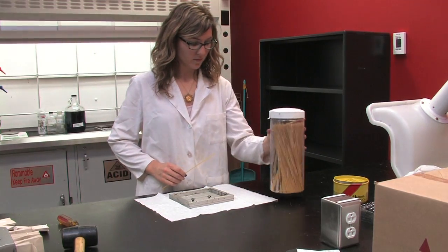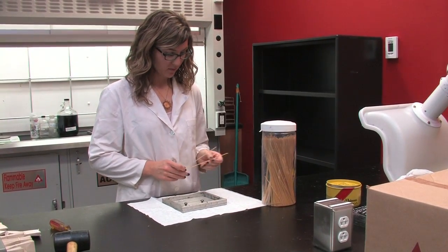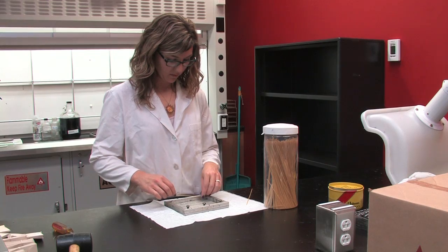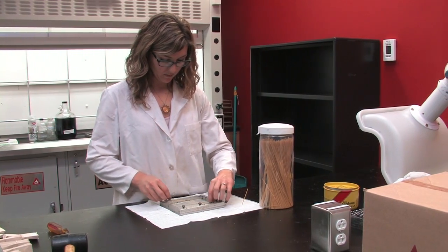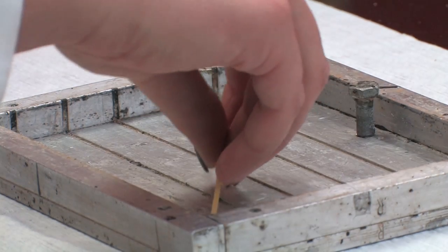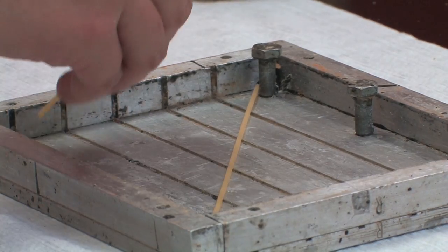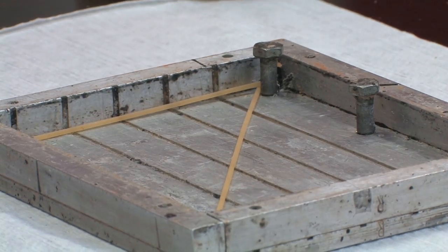The next step is to place two pieces of spaghetti in the embedding tray. One piece diagonally from corner to corner and the other vertically on the left hand side. These will be used as references later once the sample is cut multiple times.